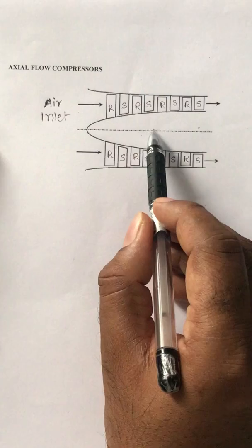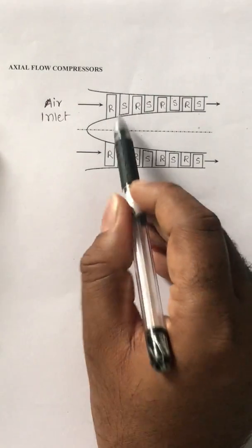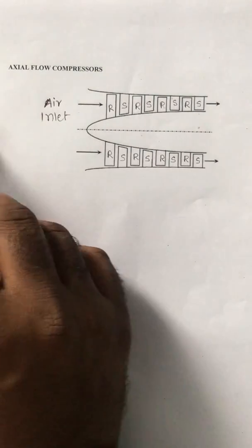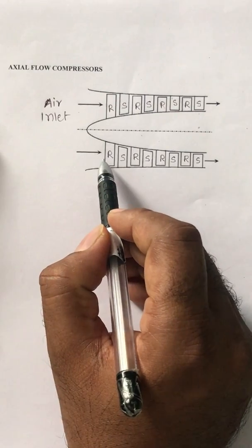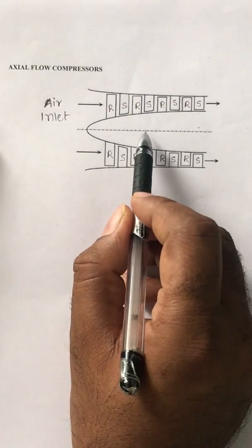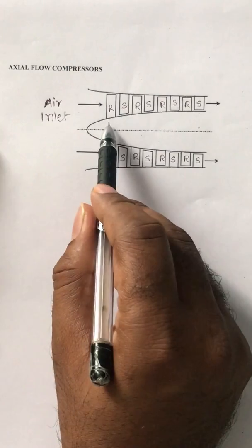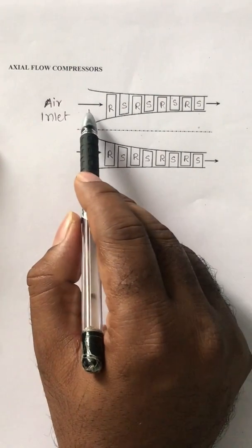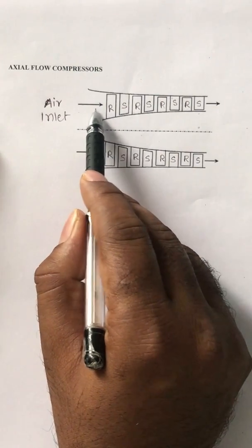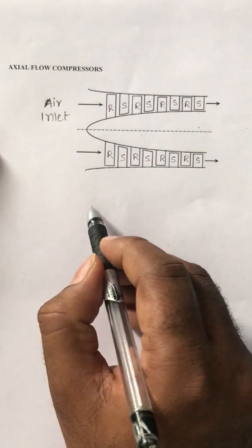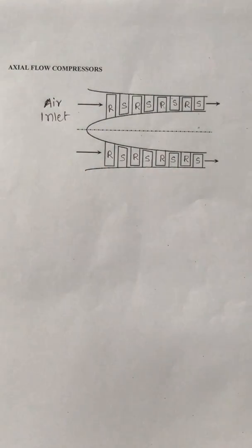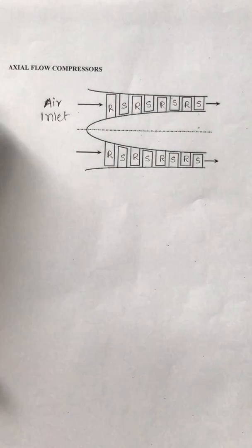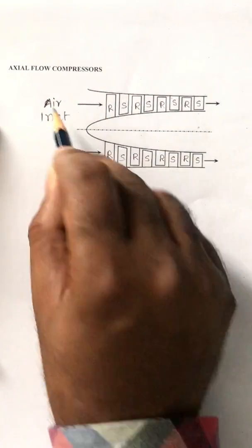When the rotor rotates, the rotor blades also rotate. When air is entering, the rotor is giving energy to the air through the rotor blades so that automatically this air gets accelerated, that means there is an increase in velocity. Once the air is entering into the axial flow compressor, the first thing is the air is going to accelerate, that means the velocity increases.